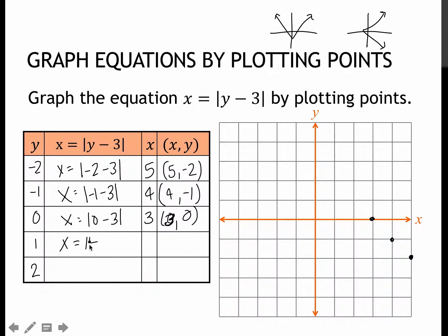X equals 1 minus 3, which of course is negative 2. The absolute value makes it positive 2. So 2 comma 1. And plugging in 2. 2 minus 3 is negative 1. Absolute value is positive 1. So I get 1 comma 2.